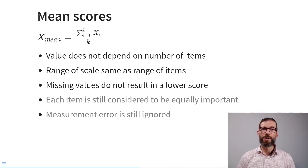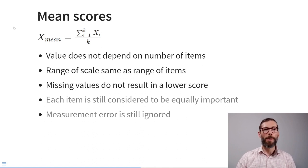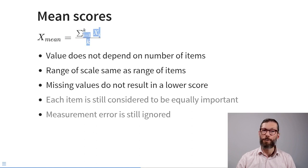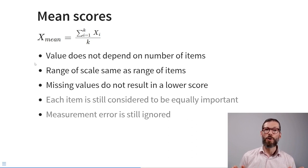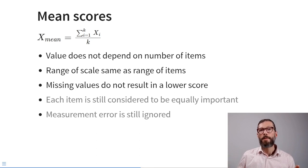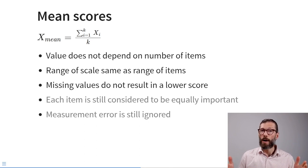Two further limitations: each item is considered equally important if we simply sum across all items, and measurement error is ignored — it becomes baked into the sum score. Some of these limitations can be addressed by calculating a mean score instead. The mean score x̄ equals the sum of individual item scores across all items divided by the total number of valid items for that participant.